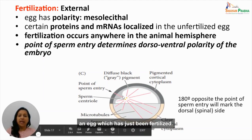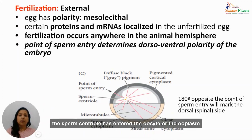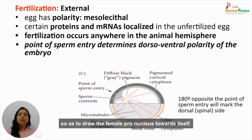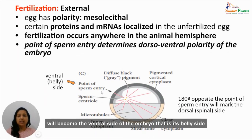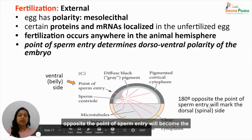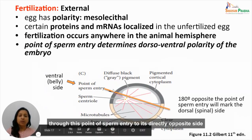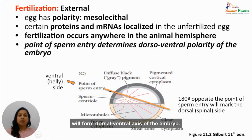Fertilization can occur anywhere in the animal hemisphere of the oocyte, while the point of sperm entry will determine the dorsal-ventral polarity of the embryo. The sperm centriole enters the ooplasm and starts forming the aster and microtubules to draw the female pronucleus toward itself. The point of sperm entry will become the ventral side of the embryo, while the side 180 degrees opposite will become the dorsal side, establishing the dorsal-ventral axis.